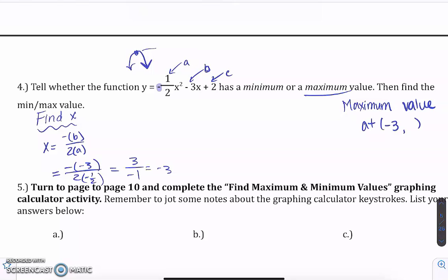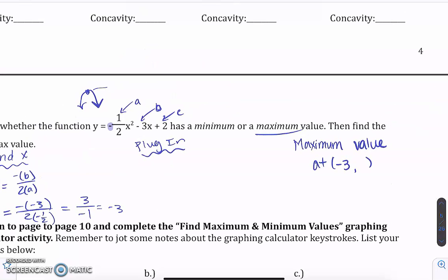So when you've got an x value, you have a function, you're trying to find y, all you need to do is plug it back in to get the y value of your vertex. So in your equation, anywhere you have an x, we're going to put parentheses and substitute that negative three value in there. So y is going to equal negative one half times negative three squared minus three times negative three plus two.